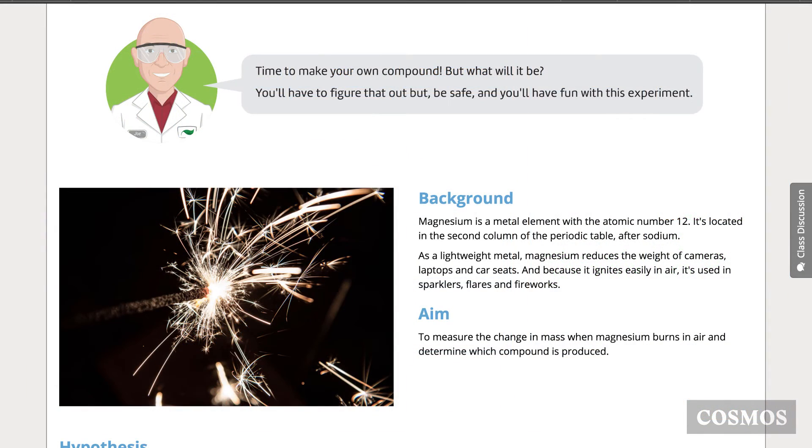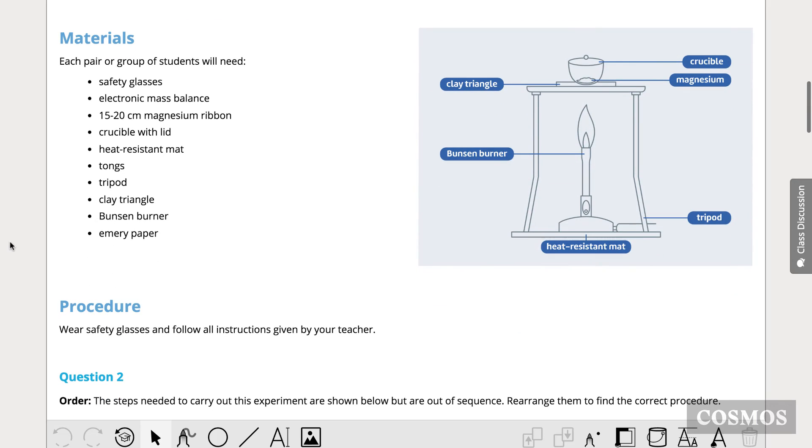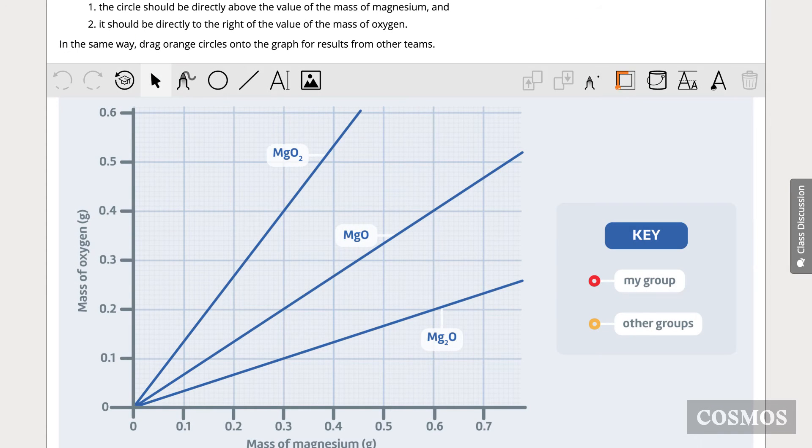For the experiment, we make some magnesium oxide. Hopefully the kids' data will be good enough to tell them which oxide they got.